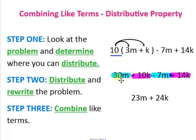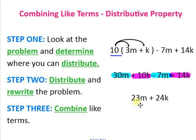10 times 3m is 30m, and 10 times k is positive 10k. Then bring down the negative 7m and the positive 14k. Highlighting like terms: 30m minus 7m is 23m, and 10k plus 14k is 24k. I made a minor mistake — it's not in alphabetical order. The correct final answer is 24k plus 23m.